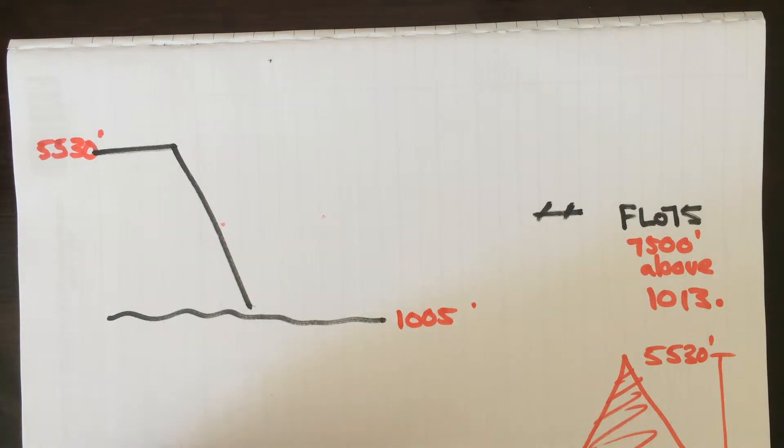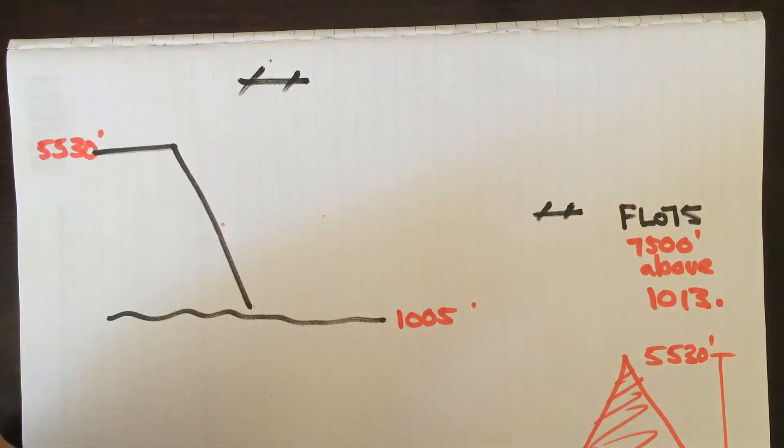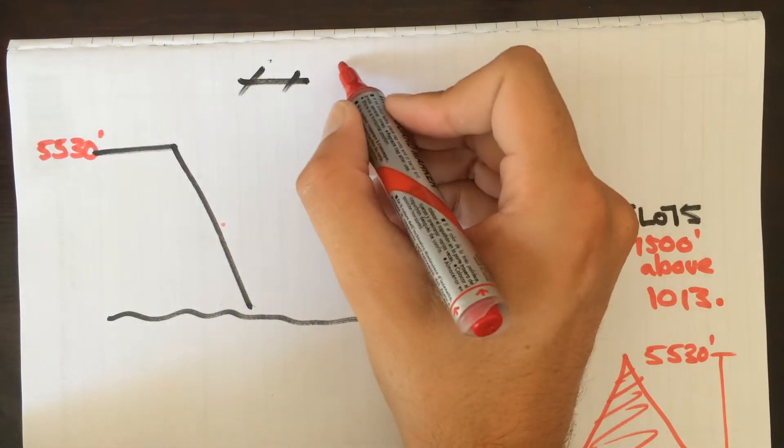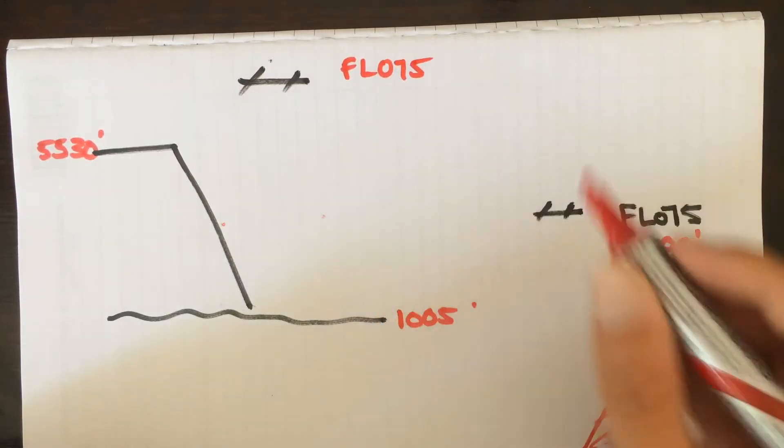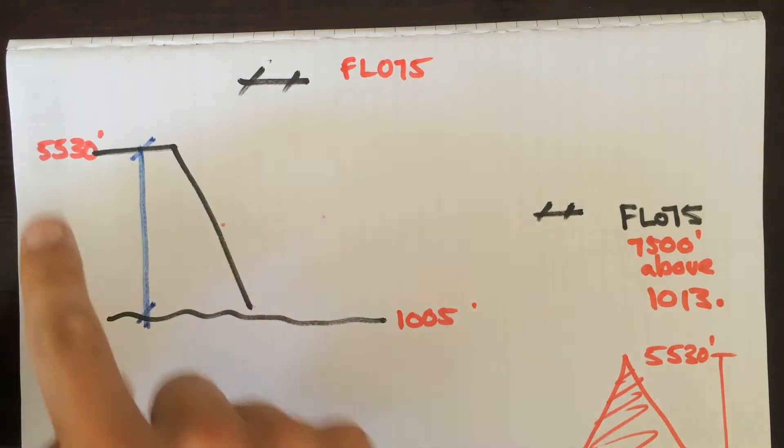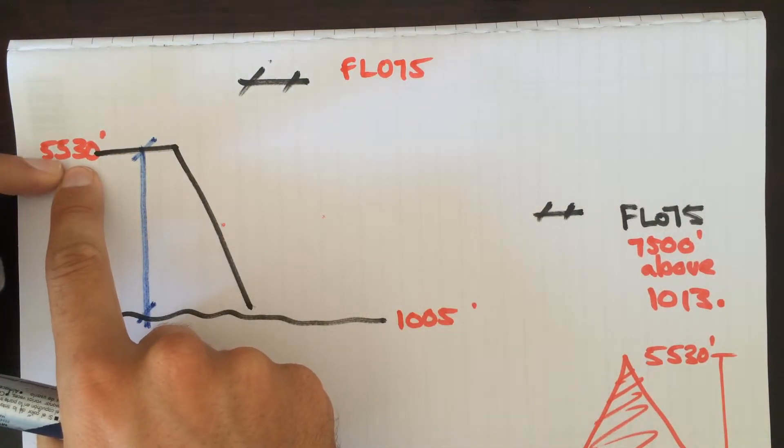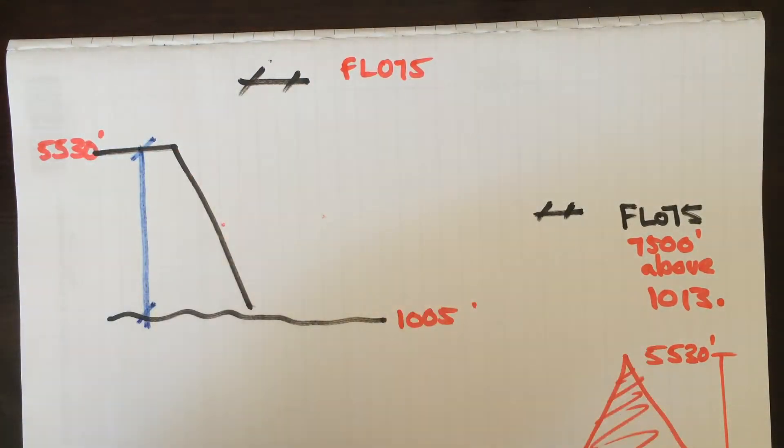And we know that our aircraft is flying along here at flight level seven five. So let's write FL075. So we know that from here to here is five thousand five hundred thirty feet. We know from here to one zero one three is going to be seven thousand five hundred feet.